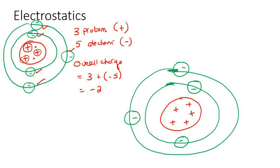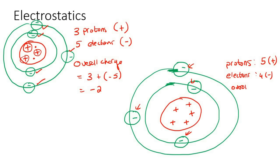Now if we look at this atom, it's got five protons - those are positive - and four electrons, which are negative. So if you work out the overall charge: five positives plus four negatives gives you positive one. So the overall charge is positive one.